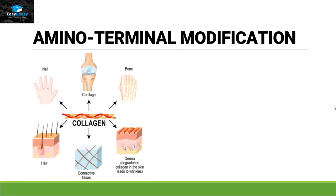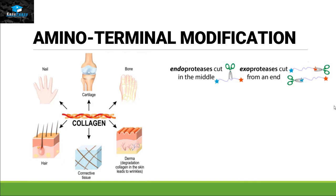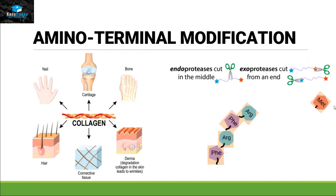But if we talk about a protein like collagen, we don't have methionine in it — collagen only has three amino acids: glycine, proline, and lysine. This means that the terminal amino acid, methionine, is cut off from that protein by enzymes called proteases. When the proteases act, the methionine moves apart from the protein, and the protein then undergoes folding into its tertiary and quaternary state in order to become active.